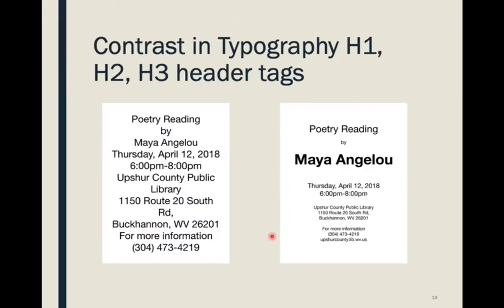Here we have typographic contrast, which is also something we refer to in web design as chunking. Here we have two flyers with the same exact information. One we can read; one we're going to walk away from and not read. The readable one has what we also refer to as hierarchy. So Maya Angelou is in an H1, poetry reading is an H2, the times in an H3, and the remaining information would be a P tag if this were a website. Now we can scan and extrapolate information quickly — if you know Maya Angelou and her poetry, you're excited right away.